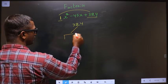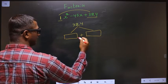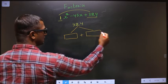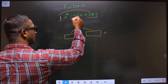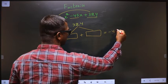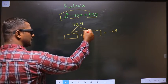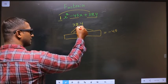Now you should look out for 2 numbers such that when you add these 2 numbers, you should get this middle coefficient, that is minus 45 in this case. And also when you multiply these 2 numbers, you should get 324.